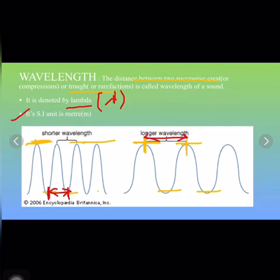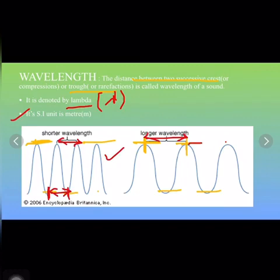Now looking at the figure, you can see a shorter wavelength and a longer wavelength. The first wave has a shorter wavelength because the distance between two crests is small. The second wave has a longer wavelength because the distance between two crests is larger compared to the first wave.